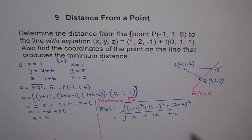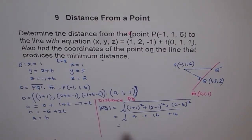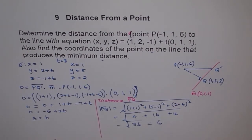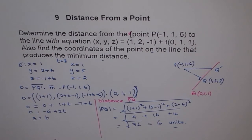That gives us 4 plus 16 plus 16, which equals 36, and the square root of 36 is 6. So the distance is 6 units. If no units are given it's good to write units. The shortest distance between the given point and the line is 6 units. Sometimes you get fractions and it's tedious without a calculator — if you do, use one.